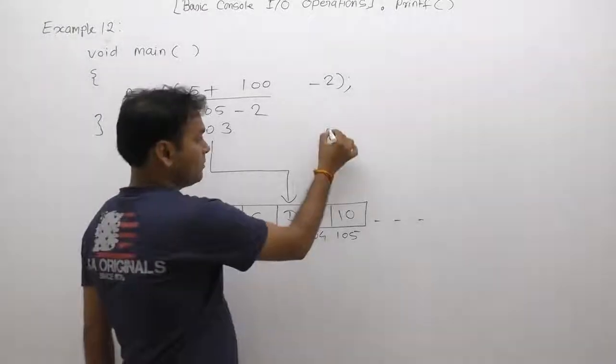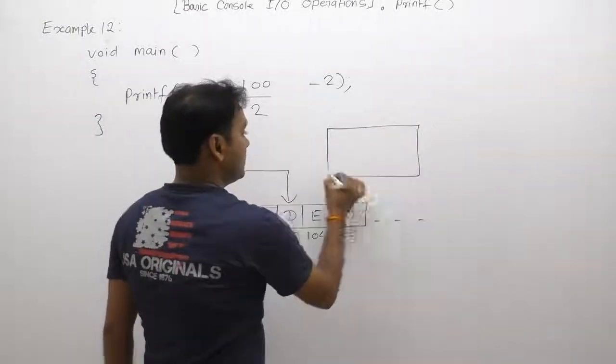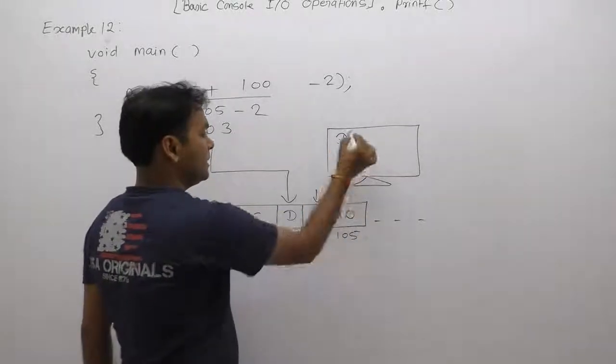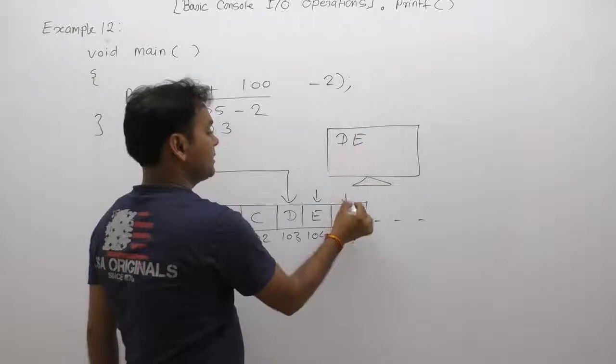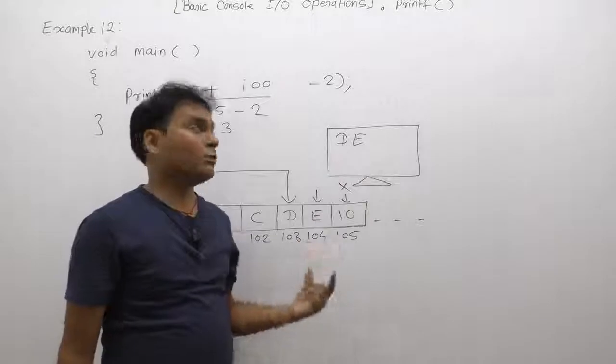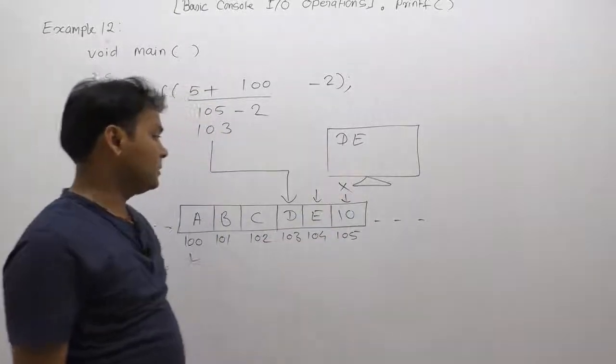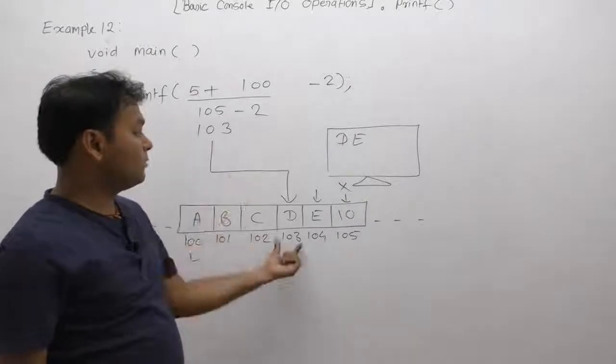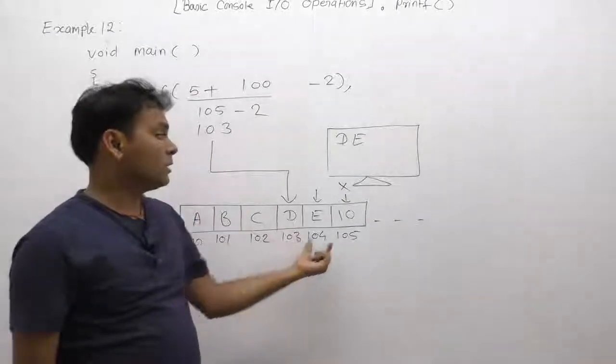Here, printf takes first of all character as D and printed on the monitor as D. Next character is E. Next character is null, therefore it will stop there. Only D and E is displayed. Printf reading starts from the given address onward and it will stop working whenever null character is encountered.